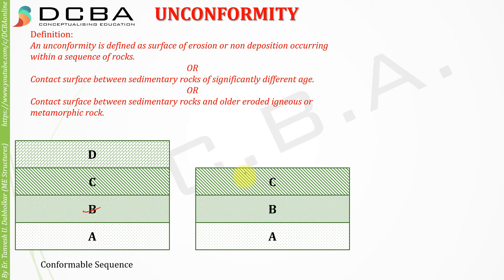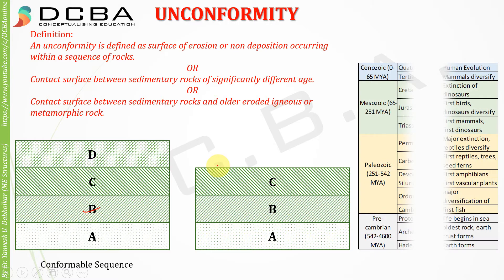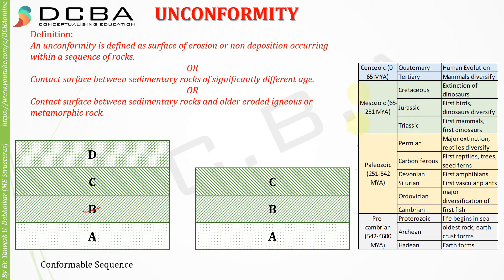Now consider a case where layers A, B, and C are deposited, but after layer C, deposition stops. Ideally layer D should have come next, but for some reason deposition stopped — and this is not for 10, 20, or 30 years, but for millions of years.